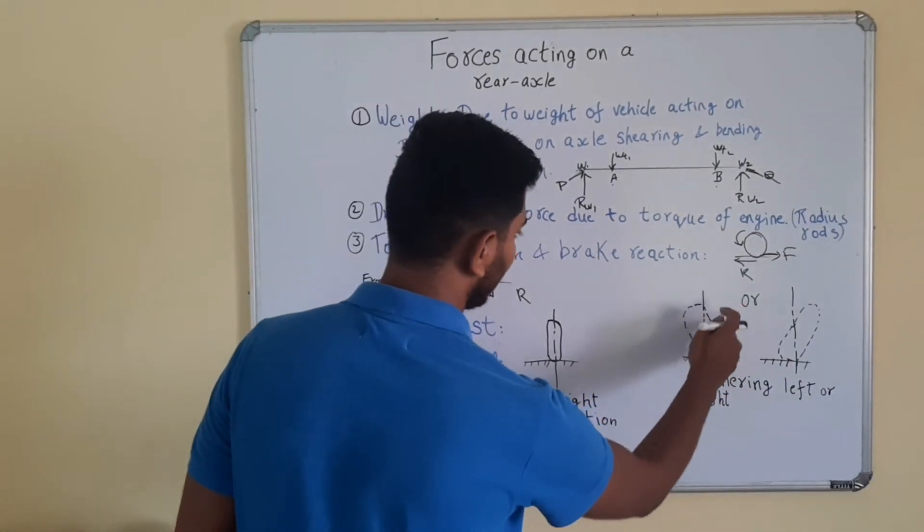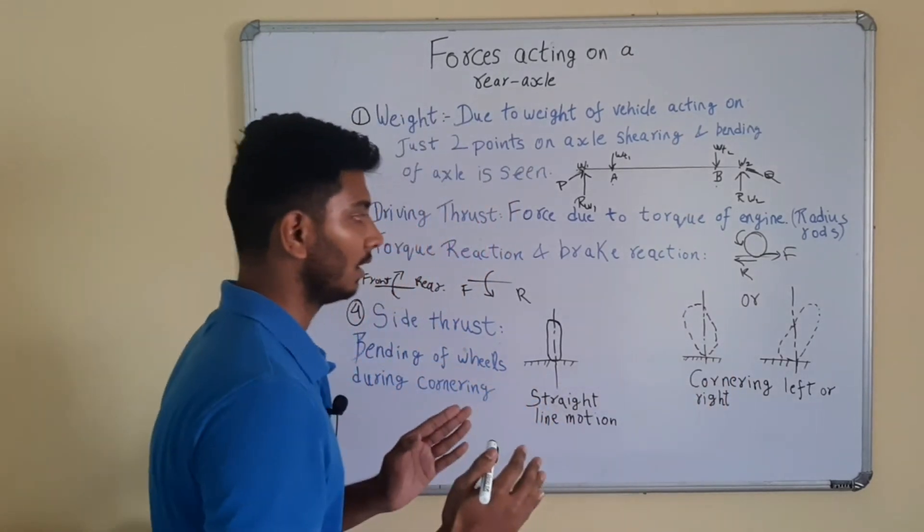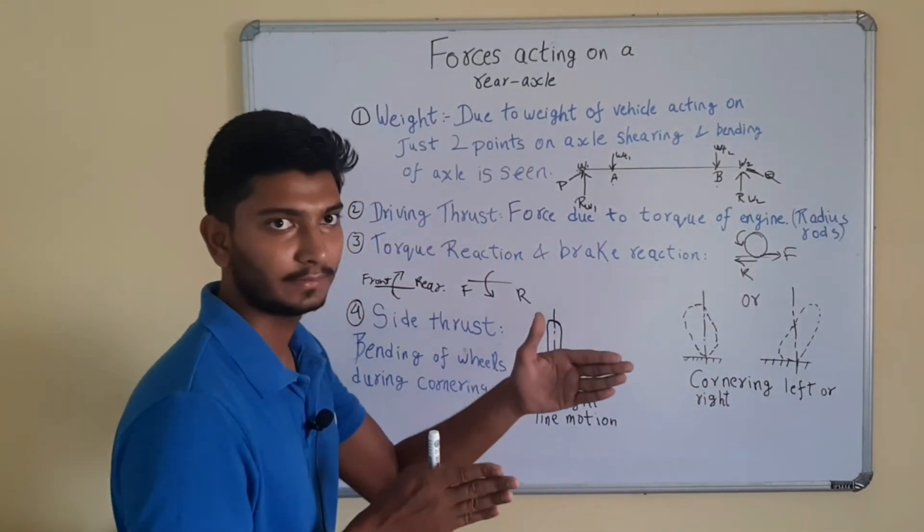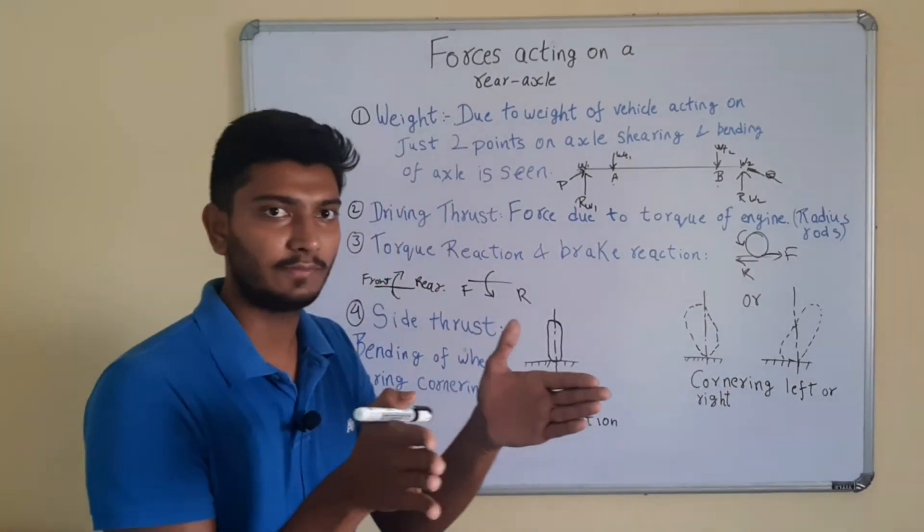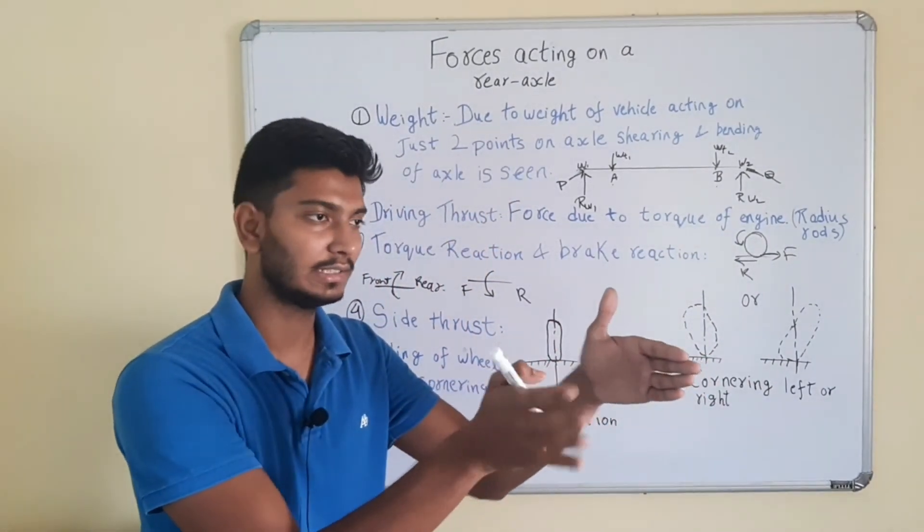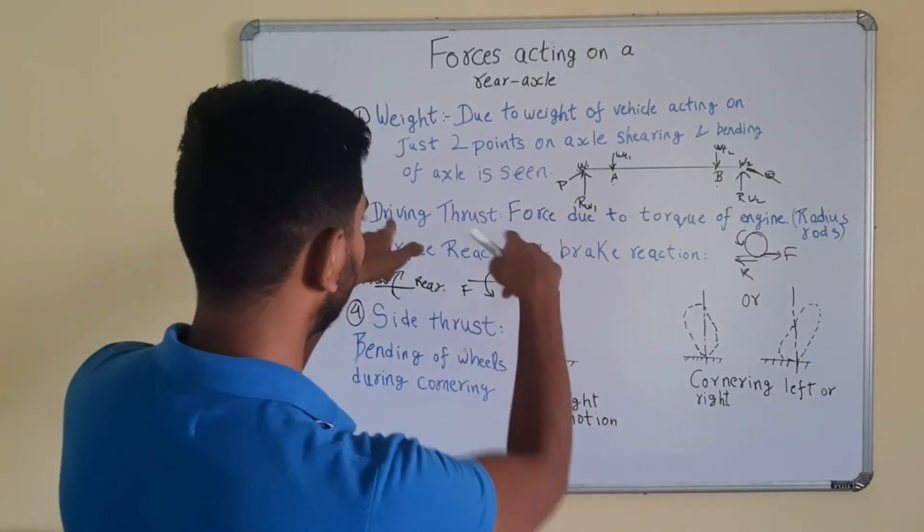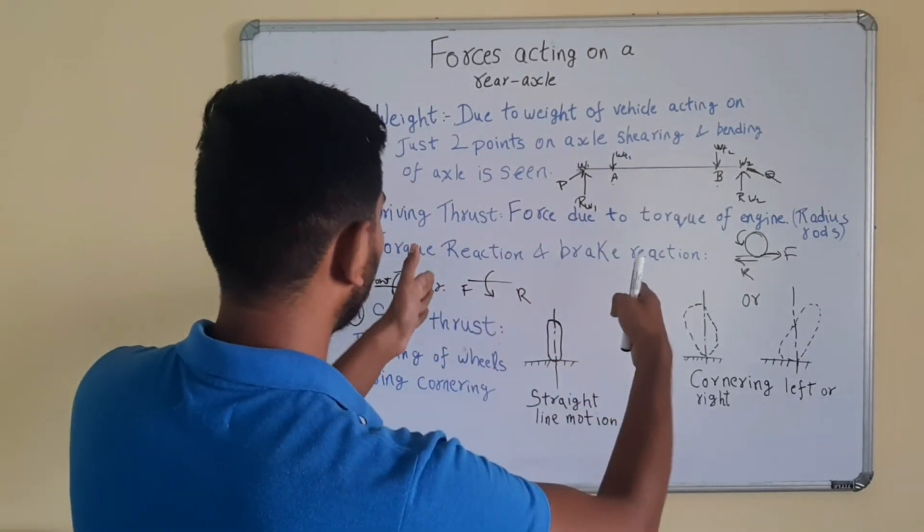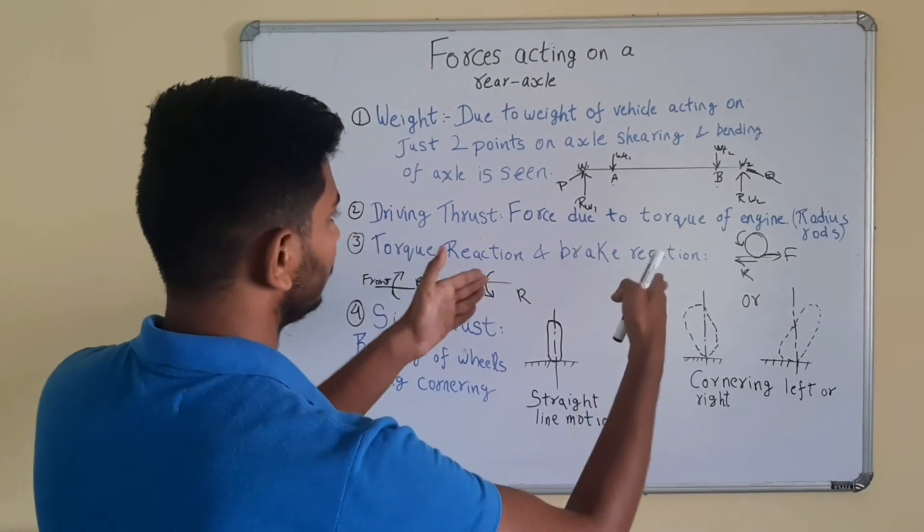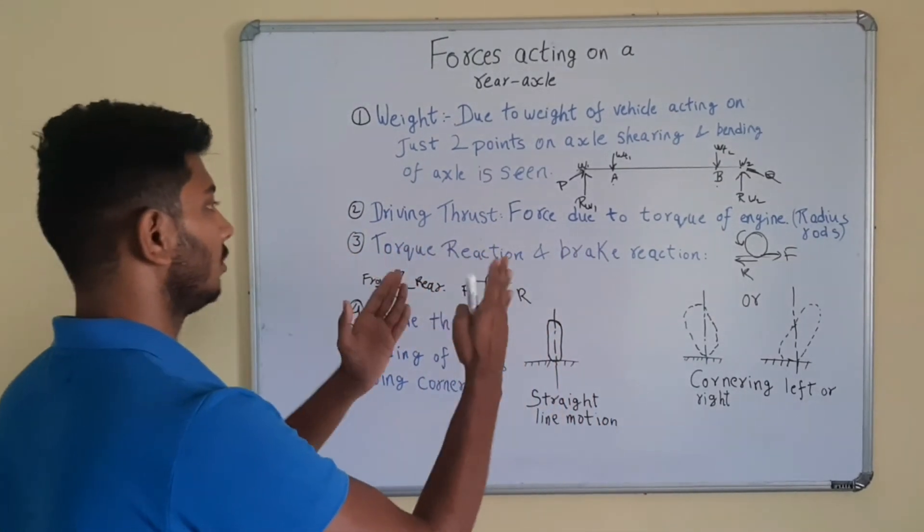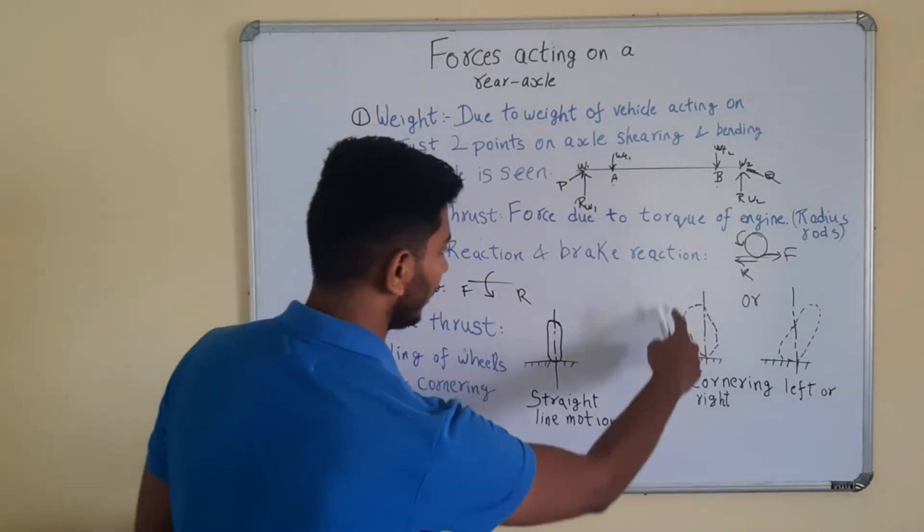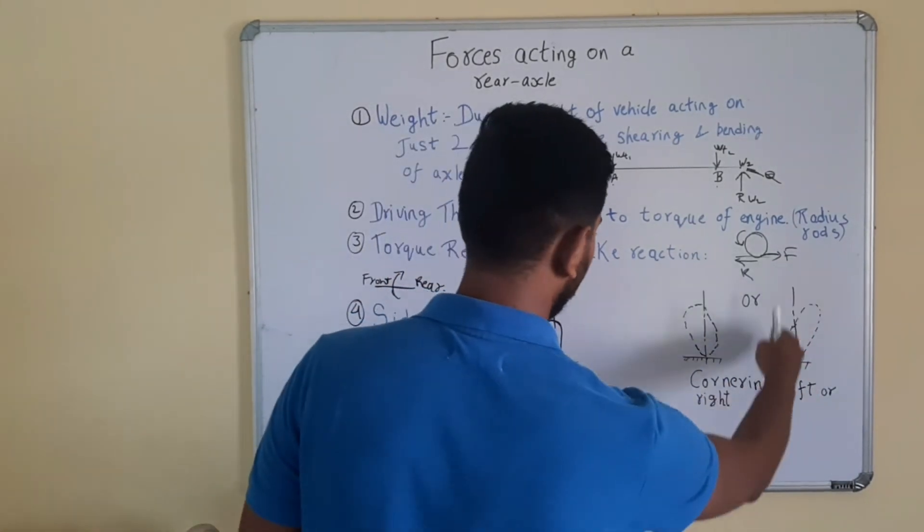So these wheels would try to rotate on their own axis. For example if you are cornering right, the body would shift this side. For example this is the front, we are looking through the board. The body is turning to the right. So what would happen? You would move this side. So the wheel would also move this side. So this is cornering right. And the opposite is cornering left.